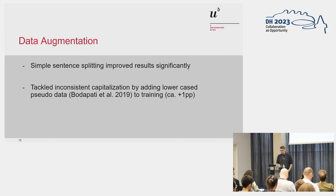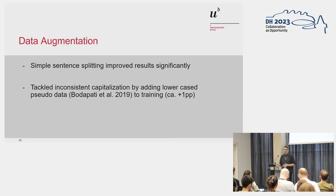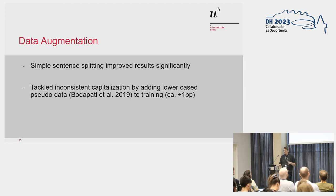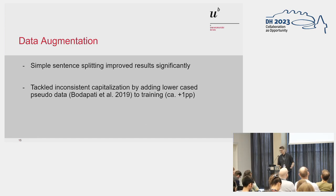Then we performed some data augmentation. One was simple sentence splitting: basically split at periods, but do not split if the sentence would be shorter than 10 tokens, and always split if the sentence would be longer than 100 tokens. This is because the LSTM architecture gets worse and worse the longer the sequence is. We did observe significant improvements by doing that — between one and three percentage points. Also, inconsistent capitalization was a problem. For our edition it was, and we basically added a copy of the training data but all lower-cased, so the feature of capitalization was less strong, and we got another percentage point that way.